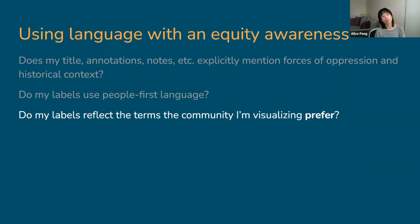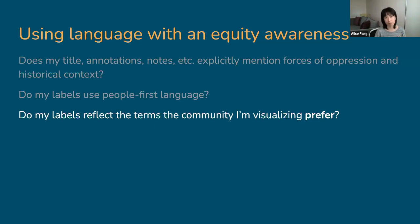Another question to ask is: do my labels reflect the terms the community I'm visualizing prefers? Language is always evolving — terms that were socially acceptable a generation ago are no longer in favor today, and new language is always appearing, for example 'Latinx' versus 'Latino' or 'Latina.' It's important to check with the communities you are researching or with your target audience for how they would prefer to be identified and to use those terms in your visualizations and reports.